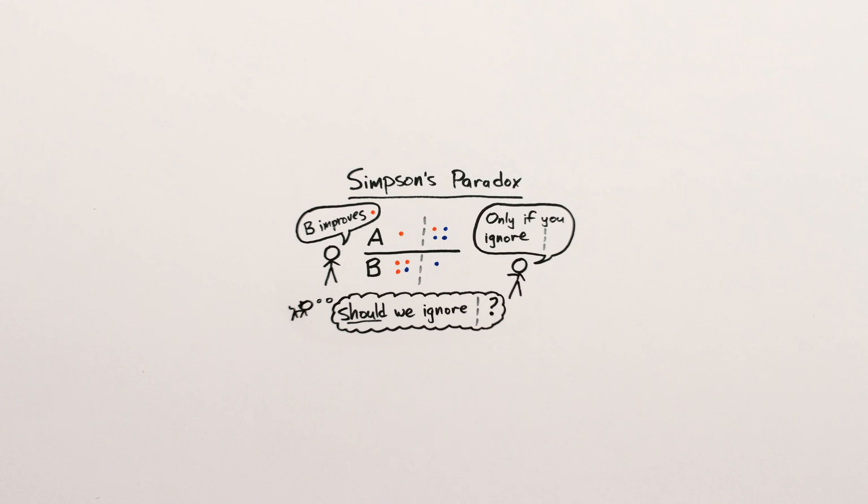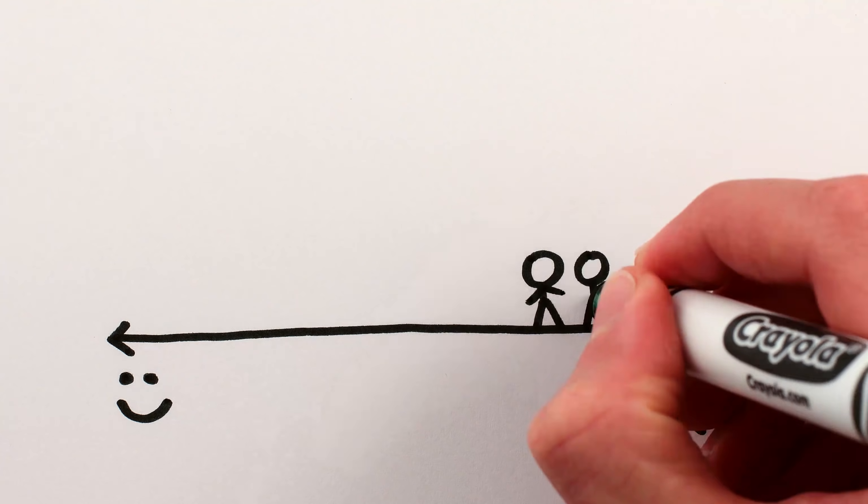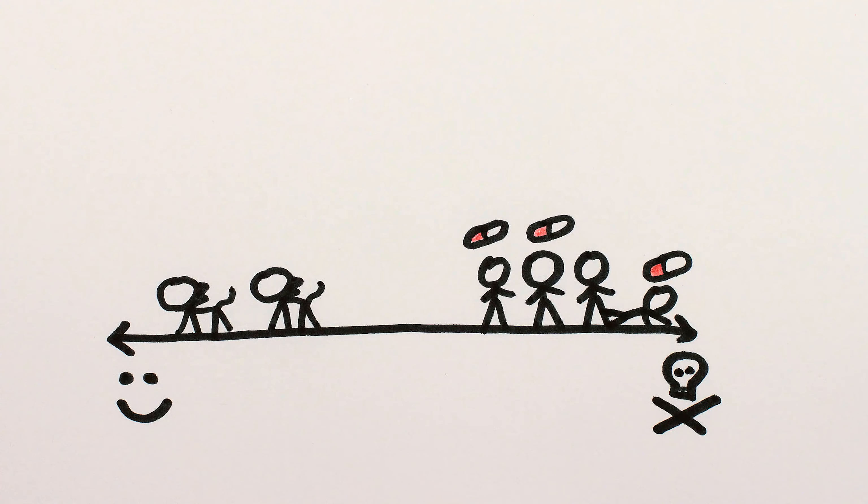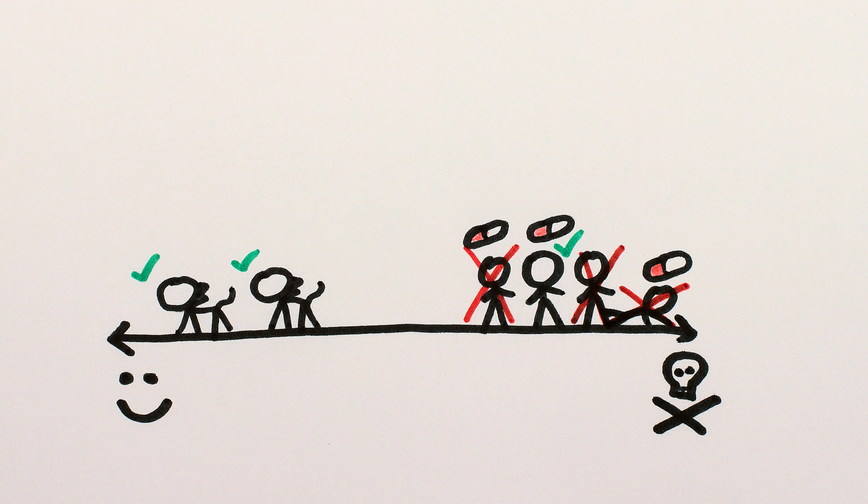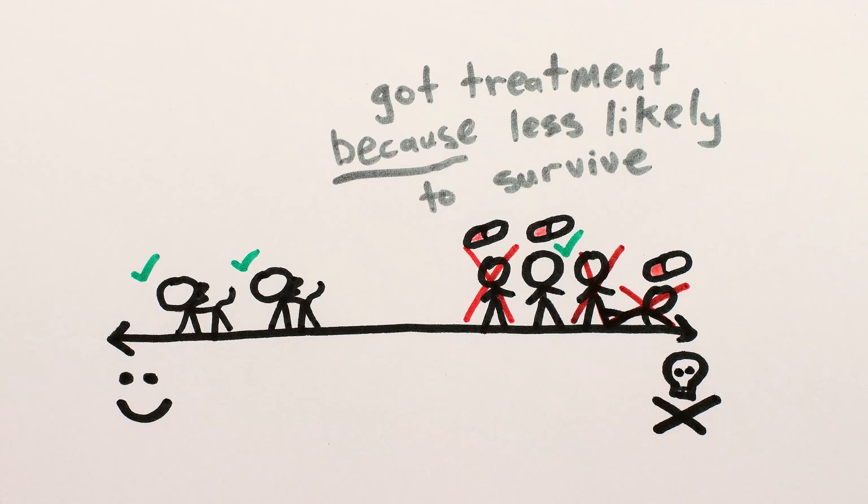And statistics alone can't help us solve it. We have to go outside statistics and understand the causality involved in a situation at hand. For example, if we know that humans get the disease more seriously and are therefore more likely to be prescribed treatment, then it can make sense that fewer individuals that get treated survive, even if the treatment increases the chances of recovery, since the individuals that got treated were more likely to die in the first place.